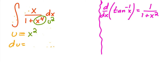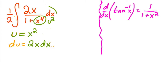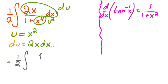If u = x², then 1 + x⁴ = 1 + u². And to get rid of the x: if u = x², then du = 2x dx. So we multiply by 2 inside and put 1/2 on the outside. What we have then is 1/2 times the integral of 1/(1 + u²) du.